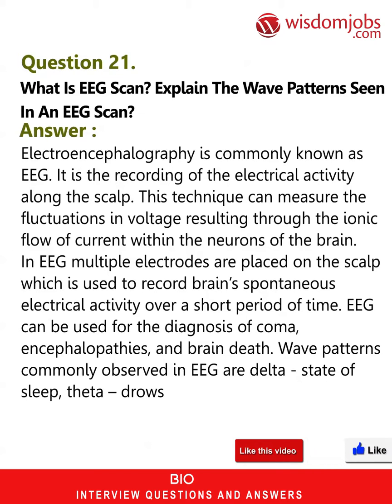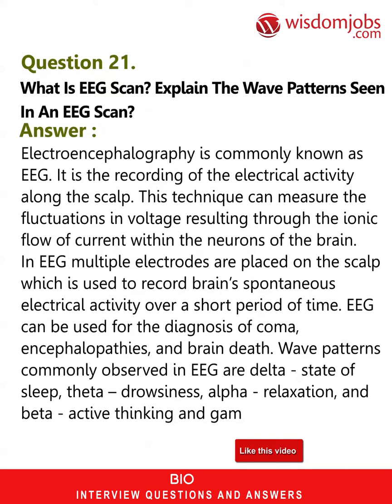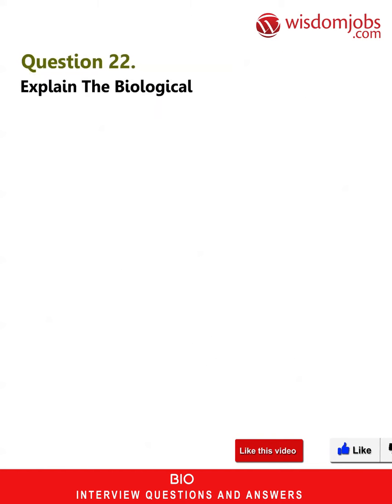Wave patterns commonly observed in EEG are: delta (state of sleep), theta (drowsiness), alpha (relaxation), beta (active thinking), and gamma.